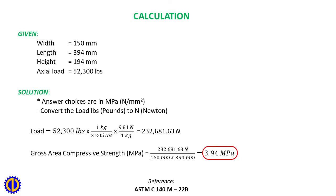Solution: Answer choices are in MPa (N/mm²). Convert the load from pounds to newtons, then divide by gross area (length × width) to get the compressive strength in MPa. Reference: ASTM C140 M-22B.